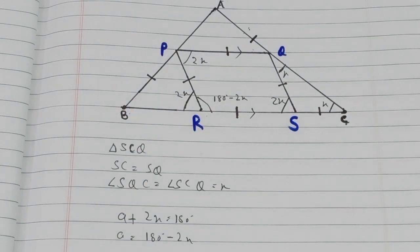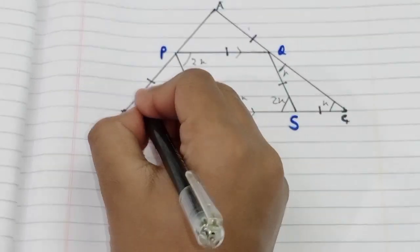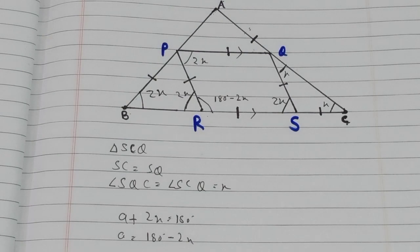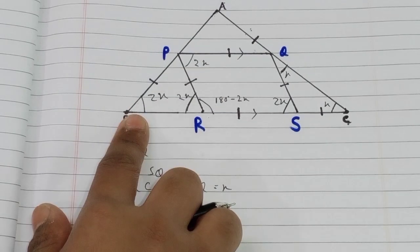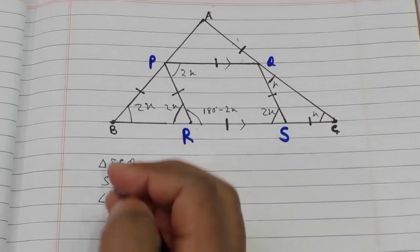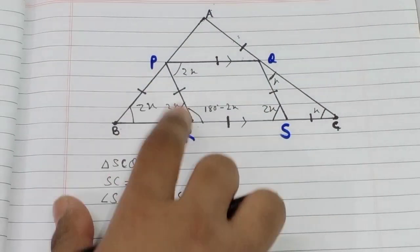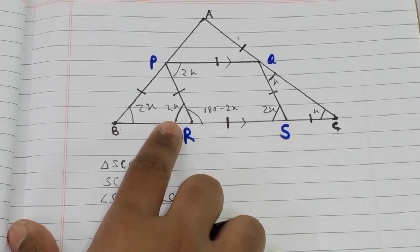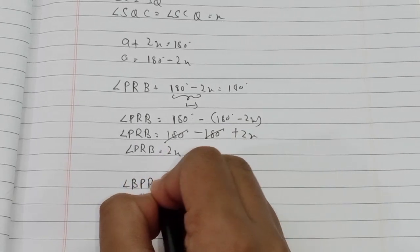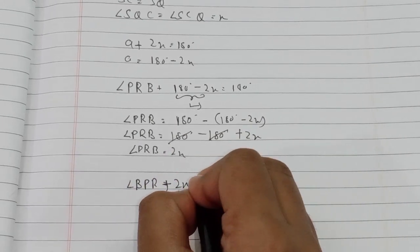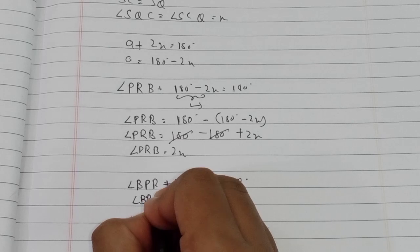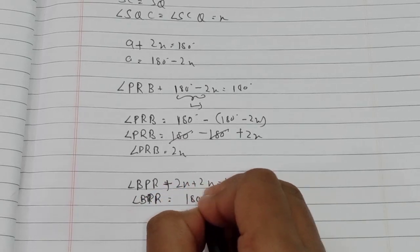Since sides PB and PR are equal, the opposite angles are also equal, so angle PBR equals 2x. Now to find angle A, we need to find angle BPR first. Since angles in triangle BPR sum to 180 degrees: angle BPR plus 2x plus 2x equals 180, so angle BPR equals 180 minus 4x.